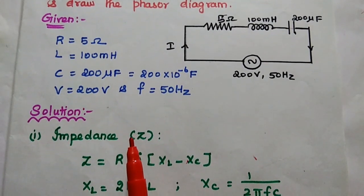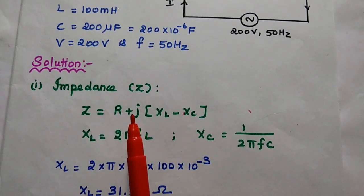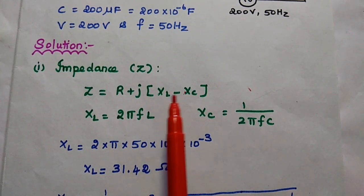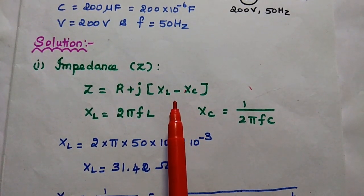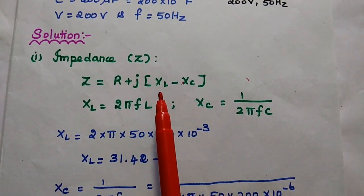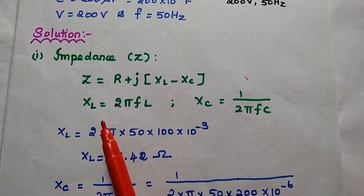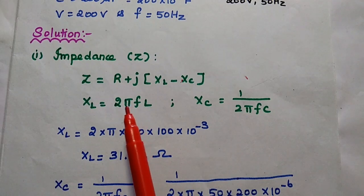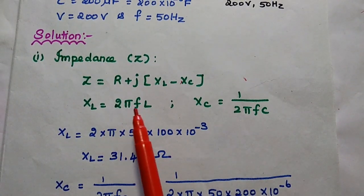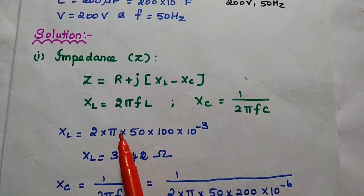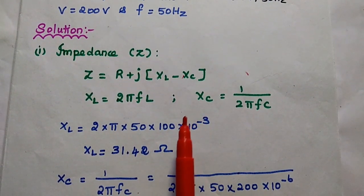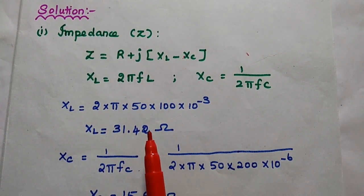First we are going to find out the impedance value. For this series RLC circuit, the formula for impedance is Z is equal to R plus J into XL minus XC. R value is given as 5 ohm. XL is the inductive reactance, its value can be obtained by using the formula 2 pi F into L. So XL is equal to 2 into pi into 50 into 100 mH, that is 100 into 10 to the power minus 3. Then we can get the inductive reactance value as 31.42 ohm.